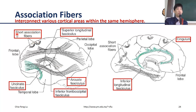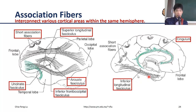There are also short association fibers called U-fibers that connect neighboring gyri. On the medial side, within the limbic lobe, there are fibers running through the whole limbic lobe. There is also the inferior longitudinal fasciculus, which connects the temporal lobe to the occipital lobe.